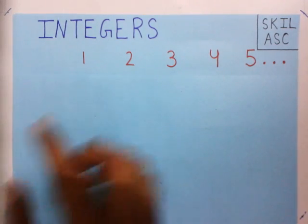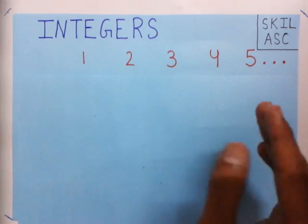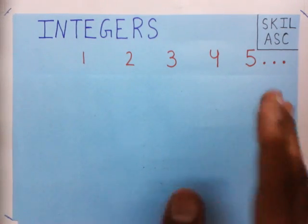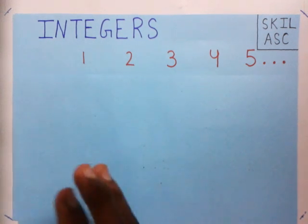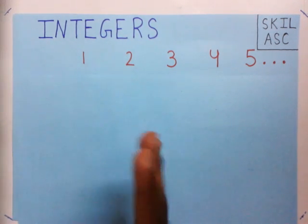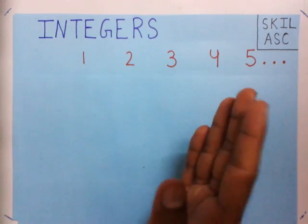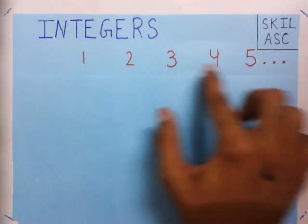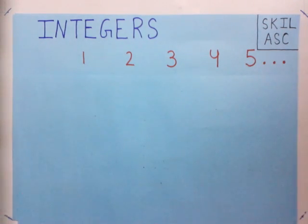You use 1, 2, 3, 4 while counting. These numbers are 1, 2, 3, 4, 5, 6, 7, 8, 9, 10, 11, 12, 13 and so on. These are the numbers which help us while counting, and you will use them in your daily life.